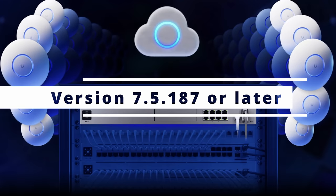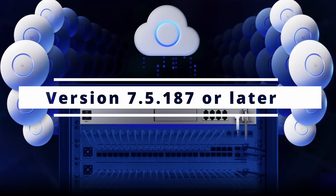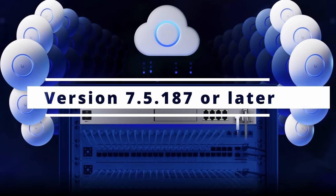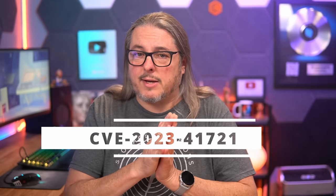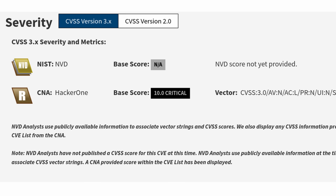Tom here from Lawrence Systems. On October 23rd of 2023, Ubiquiti released a security bulletin for all Dream Machine models to update to the latest Unifi Network version 7.5.187 or later. This is the patch for CVE-2023-41721, which has a score of 10, which means extremely vulnerable.